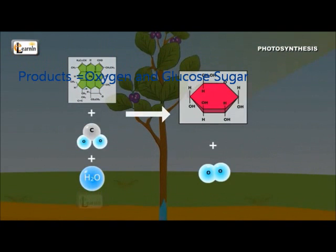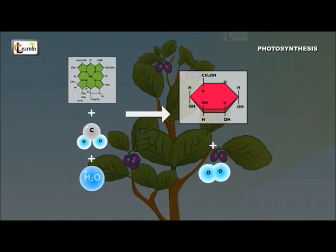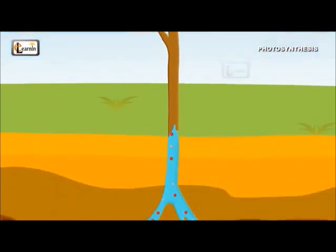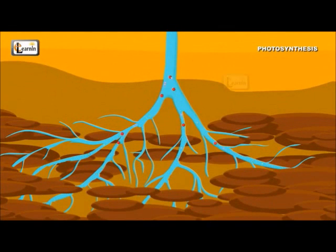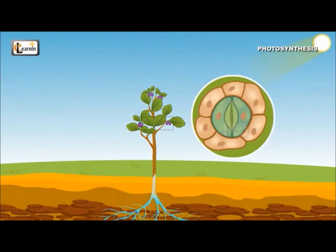Glucose is used by the plants for their growth. Some of the glucose is used immediately, and the extra glucose which is not used is stored in the form of starch in the leaves. Some amount of this extra glucose is also stored in the roots of the plants. This extra glucose is used to perform photosynthesis when there is no sunlight.